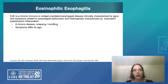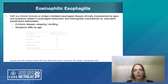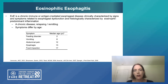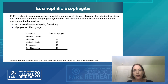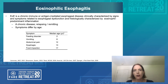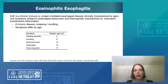Eosinophilic esophagitis is a chronic disease. The symptoms are related to dysfunction of the esophagus, and histologically it's characterized by eosinophilic inflammation. Symptoms vary by age, and dysphagia becomes a more predominant hallmark symptom by adolescence. Treatment approaches include removal of foods from the diet, proton pump inhibitors, and swallowed steroids. There are currently no FDA-approved treatments for eosinophilic esophagitis.